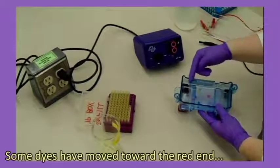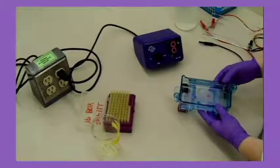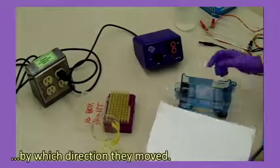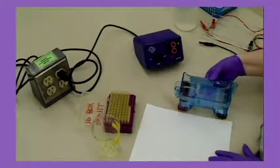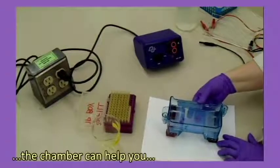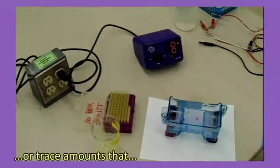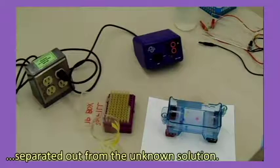Some dyes have moved toward the red end and some to the black. You should be able to tell the charges of the molecules by which direction they moved. Putting a sheet of paper under the chamber can help you to see lighter colored dyes or trace amounts that separated out from the unknown solution.